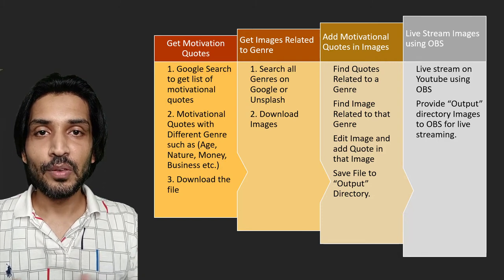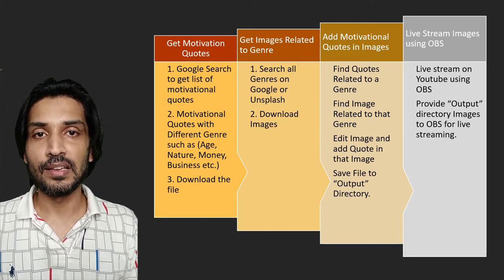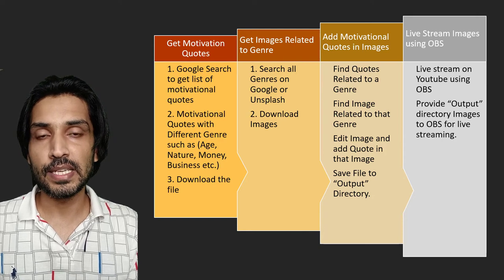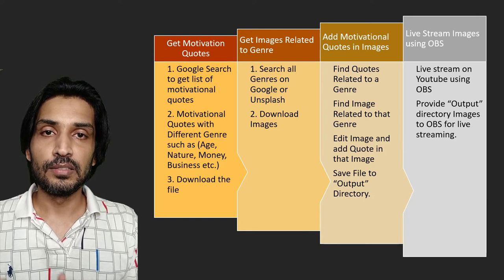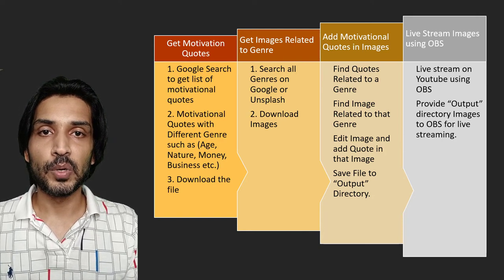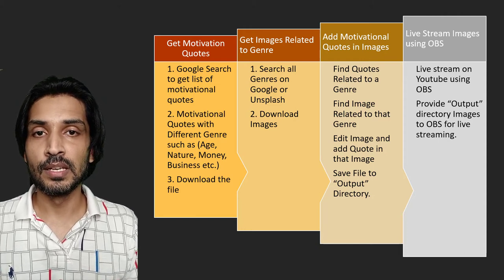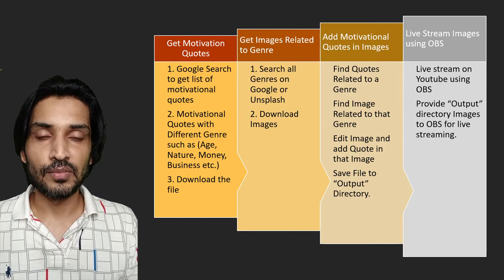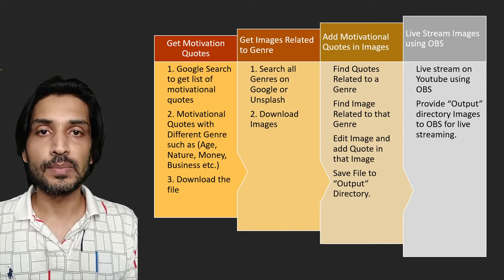Once we have the output folder ready with all images containing motivational quotes, we are going to use OBS to live stream all of these images — showing one image every few seconds — and we can keep this OBS stream running 24/7. If you want, you can also enhance these steps by using a virtual VPS server to ensure that your program runs 24/7 for months or even a year.